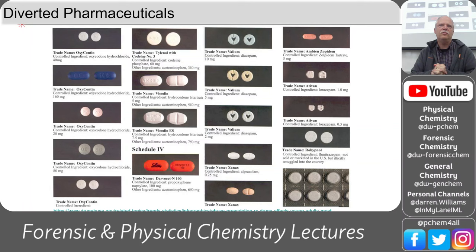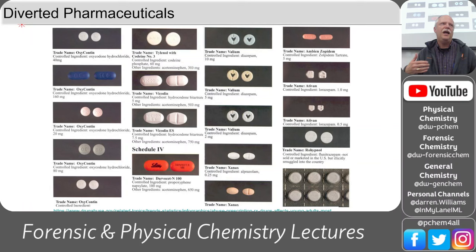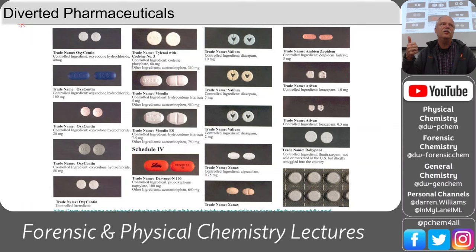Diverted pharmaceuticals: a lot of times kids steal their parents' prescriptions for pain medicines. Parents may have gotten hooked on opioids after surgery or chronic pain, can't fill enough prescriptions, and start buying on the clandestine market. The problem is those pills are sometimes laced with fentanyl. We've seen many young people die on their very first use — they had no tolerance, took what they thought were their parents' pain pills, and fatally overdosed.